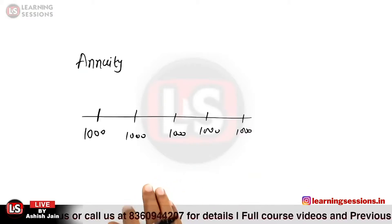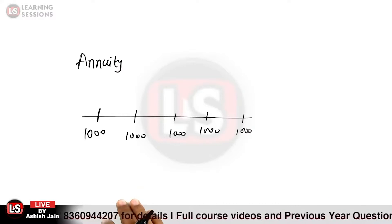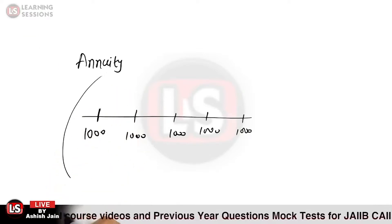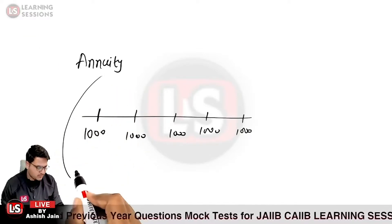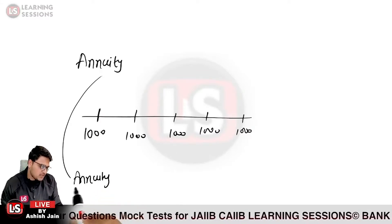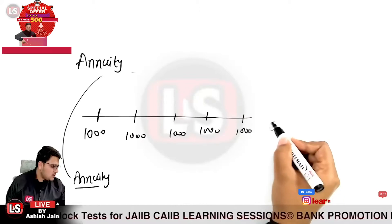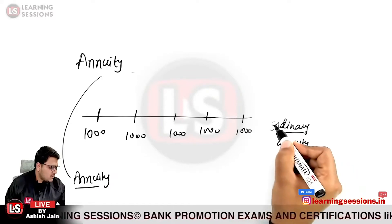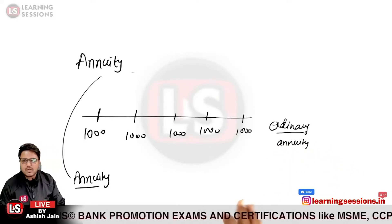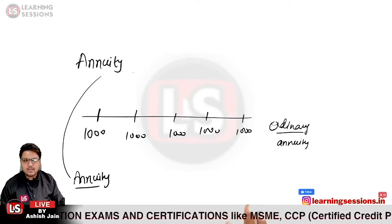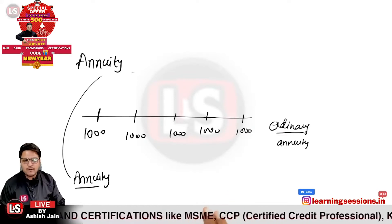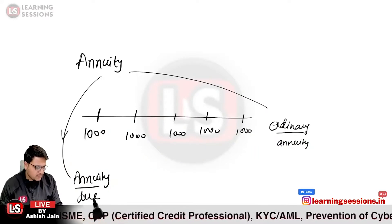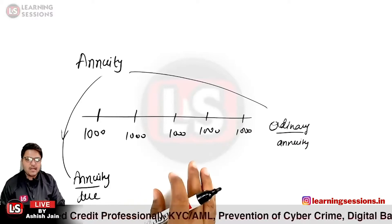If you are receiving or paying the amount at the beginning of the period, it is said to be annuity due. If you are receiving or paying the amount at the end of the period, it is said to be ordinary annuity. We have already covered these concepts under JAIIB exams in Accounting and Finance for Banking, so you must be aware of these definitions.